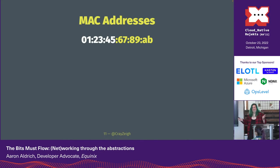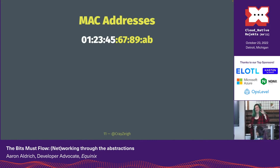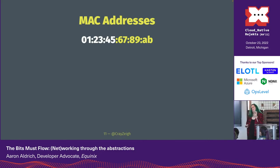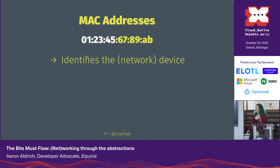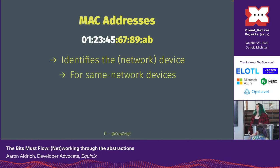MAC addresses are six bytes of hexadecimal code. The first three bytes are typically assigned to a manufacturer and the last three to the device. That used to be burned in permanently, but now phones spoof their MAC address every time they connect to a new Wi-Fi network. MAC addresses are used to identify the network device — the port or destination for sending information — and they apply only to same-network traffic; you won't see remote network MAC addresses wrapped around a packet.